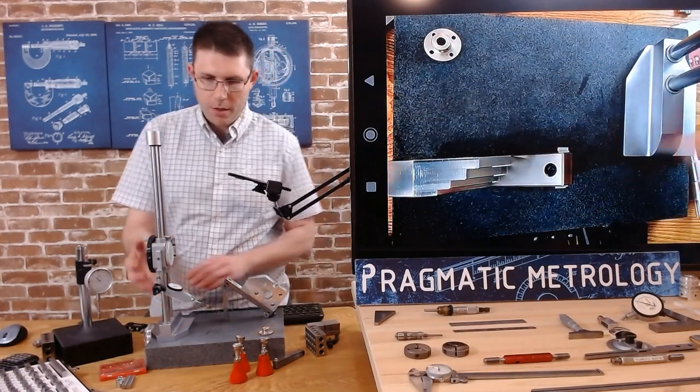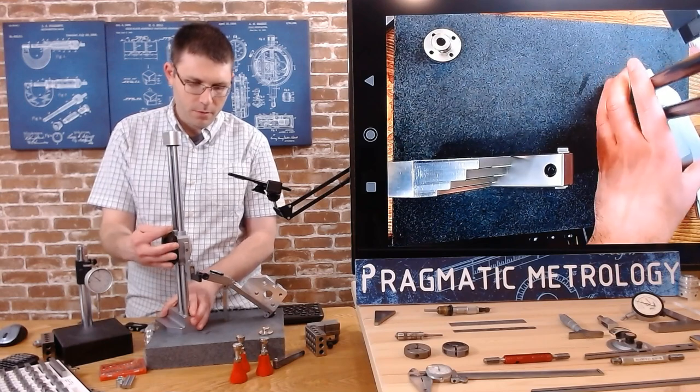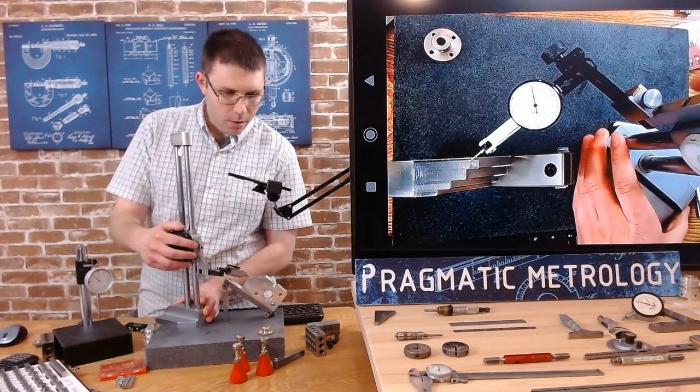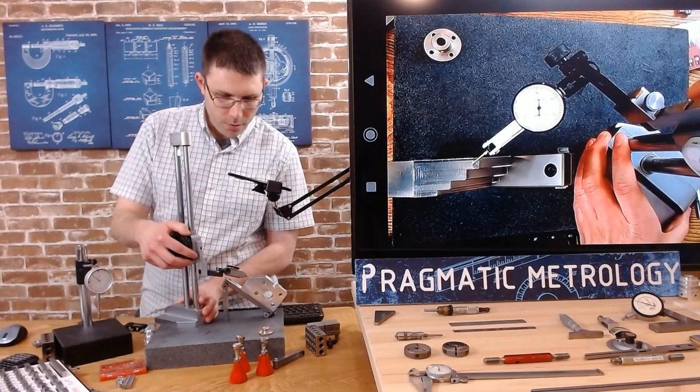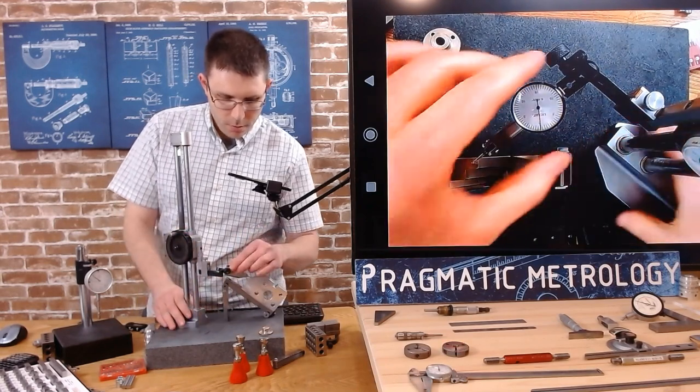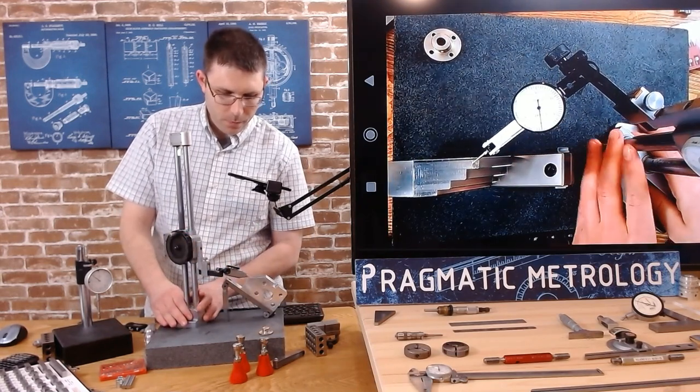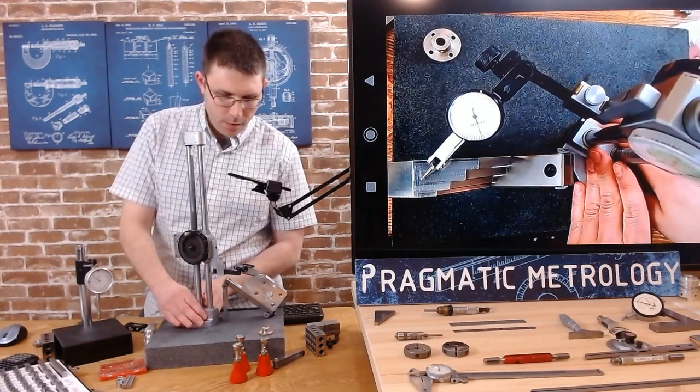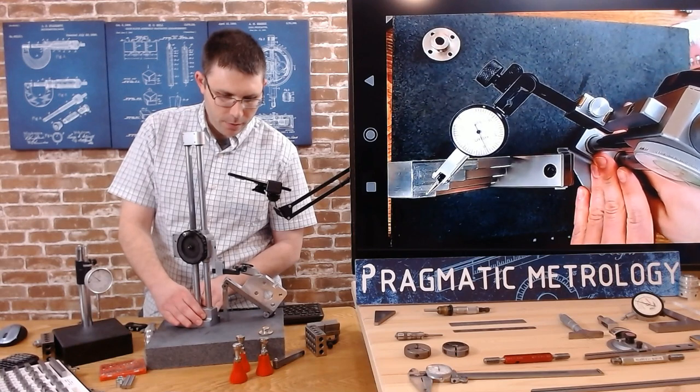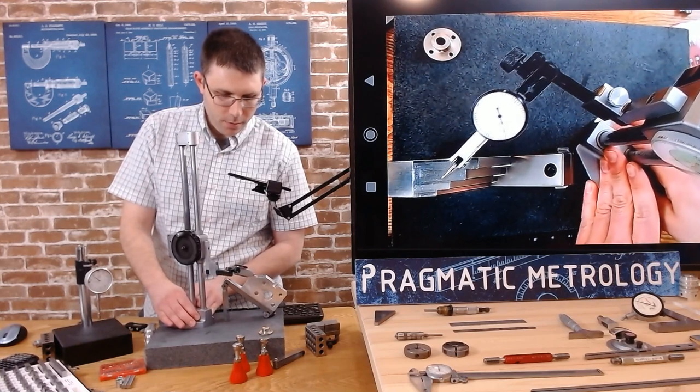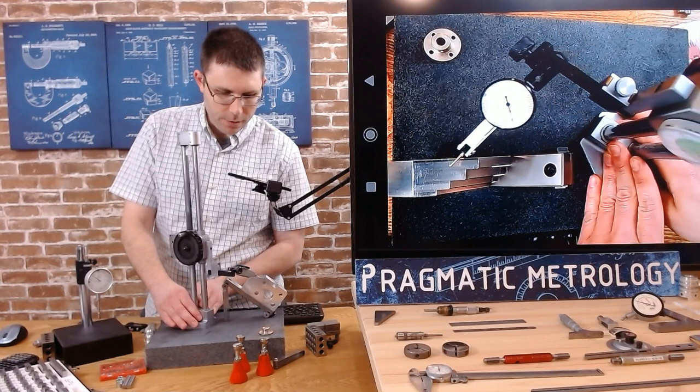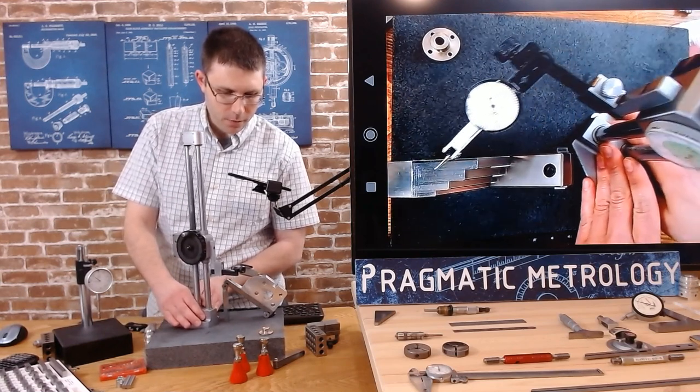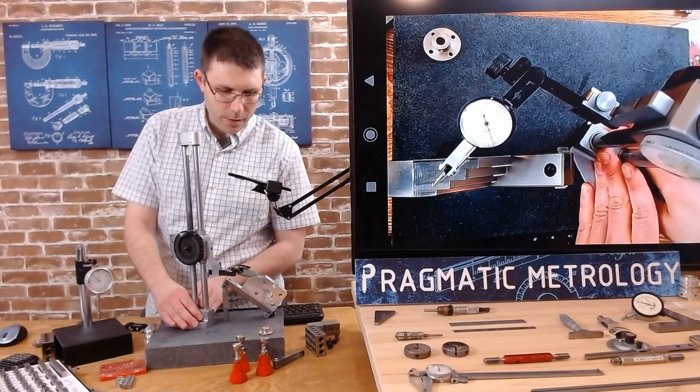Now we're going to bring up our indicator and zero on one corner. Then we're going to sweep and look for some error. I'm going to sweep all around and man, it's really not a lot of error. Really really tight tolerance and held very tight as well.